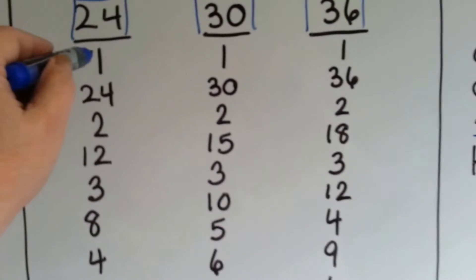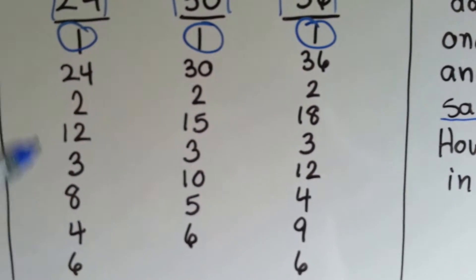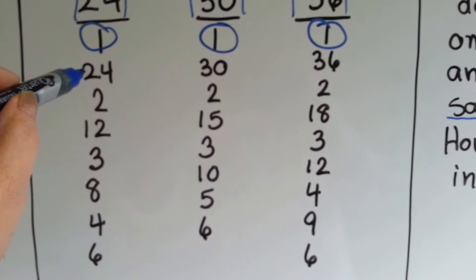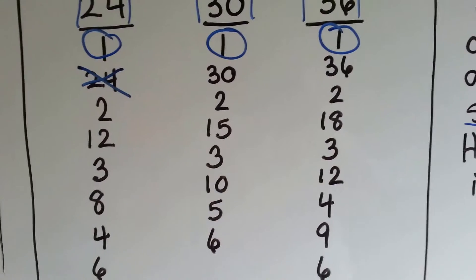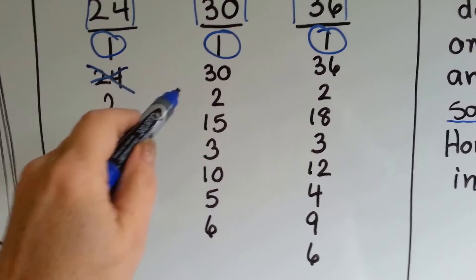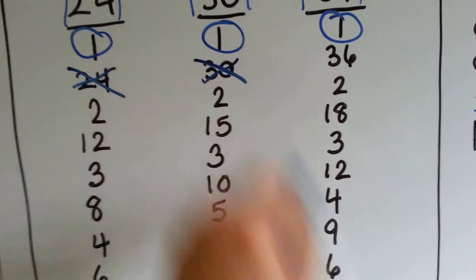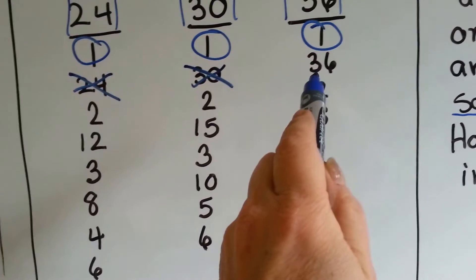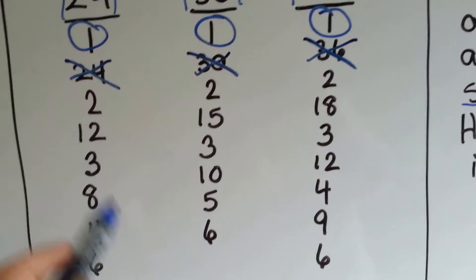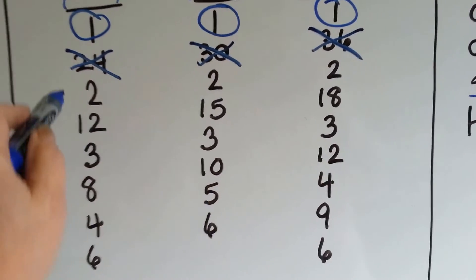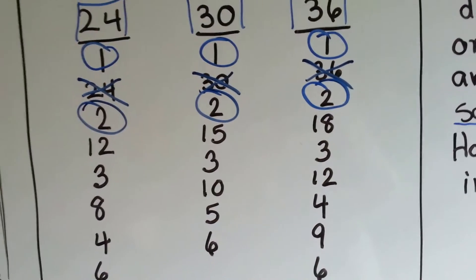They all have a 1 in common. Do they all share 24? No — 30 doesn't have a 24 and neither does 36, so that's not a common factor. Do they all have a 30? No, only 30 has it. Do they all have a 36? No, he's the only one. But do they all have a 2? Yes — 2 is a common factor of 24, 30, and 36.